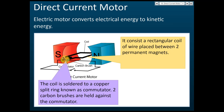So the first things you need to know about a direct current motor: there's a coil, there's a commutator, and it is held by two carbon brushes. The carbon brushes conduct electricity between the split rings and the circuit, and allow the split ring commutator to slide and rotate at fixed positions.